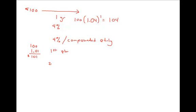During the second quarter, I would receive 1% again, but it's not 1% of $100 — it's 1% of $101. So I'd multiply 101 times 1 plus 1% to get $102.01. So I've earned a little bit of extra interest. I'm basically earning interest on this extra $1 the second quarter.